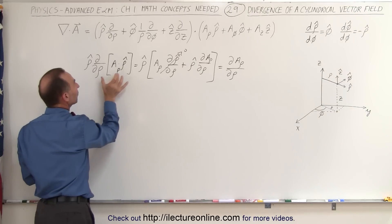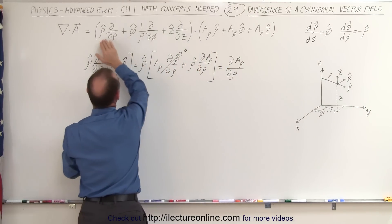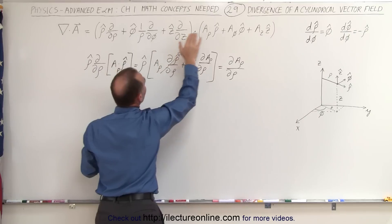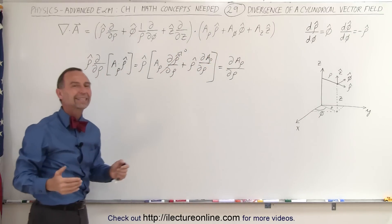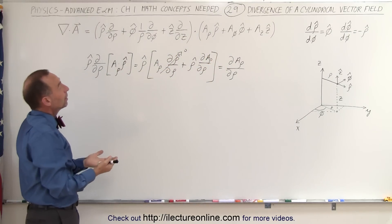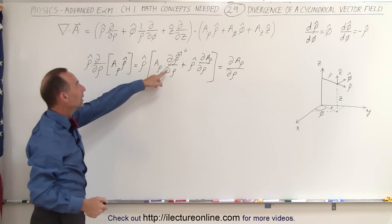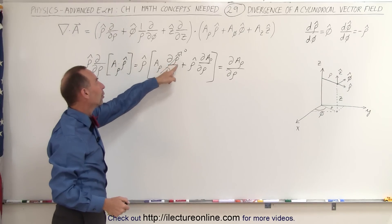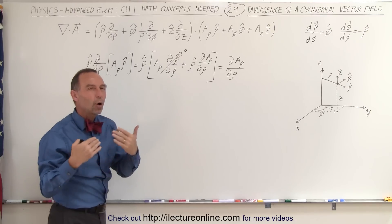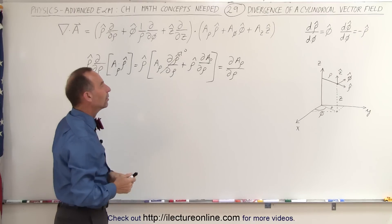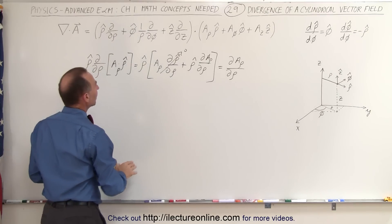Notice that each time we take the partial derivative of one of these terms we end up with two terms, so we have three times three times two — a total of 18 terms. But we can simplify by noting that whenever the partial of rho-hat with respect to rho appears, it goes to zero, so we don't need to write all those terms down.